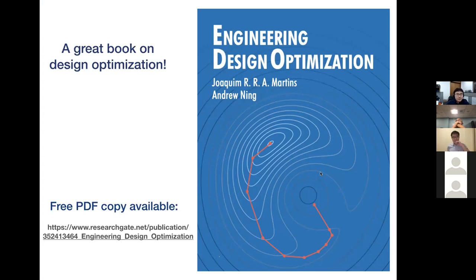The presenter mentioned a book recommendation from Professor Joaquim Martins: Engineering Design Optimization. It's a great book containing detailed coverage of adjoint method development, gradient-based optimization, and multi-disciplinary optimization, with many impressive figures. A free PDF version is available for those interested in learning about engineering design optimization.